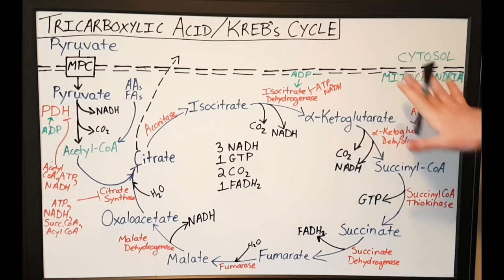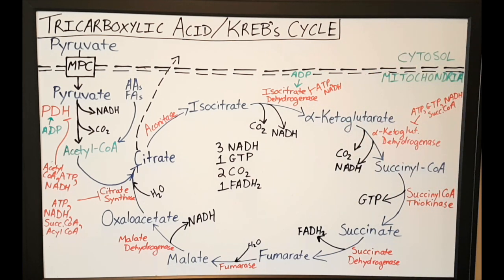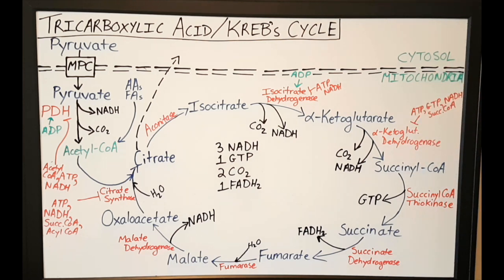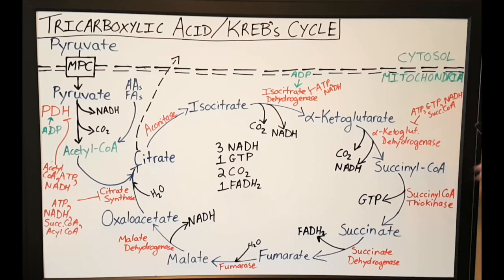Once you have alpha-ketoglutarate, it will also be decarboxylated and oxidized by the enzyme alpha-ketoglutarate dehydrogenase to form succinyl-CoA, along with co-products carbon dioxide and NADH. Alpha-ketoglutarate dehydrogenase is negatively regulated by ATP, GTP, NADH, and succinyl-CoA, meaning it is subject to negative feedback inhibition.